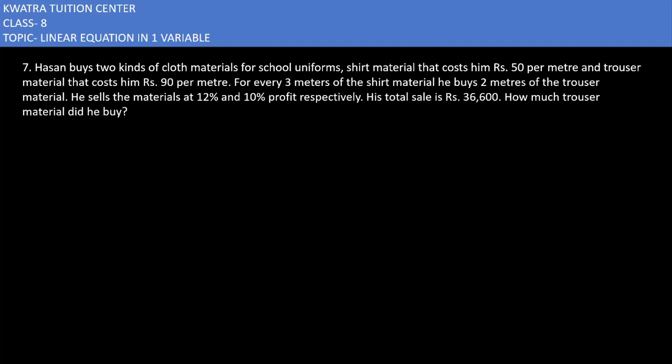Let's start with the seventh one. It says Hassan buys two kinds of cloth material for school uniforms. Shirt material that costs him rupees 50 per meter. So the cost of shirt material is 50 rupees per meter. Next information given is trouser material that costs him rupees 90. Cost of trouser material is rupees 90 per meter.